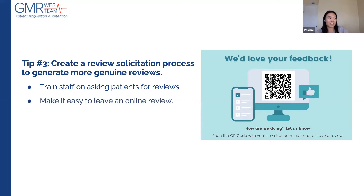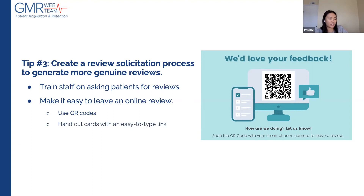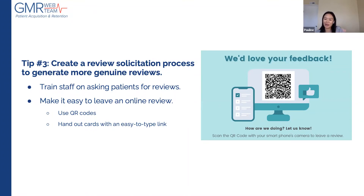You still want to make it easy for patients to leave a review. We recommend having a QR code at the front desk — it's really easy to generate one online linked to your Google, Facebook, or Healthgrades profile. You can also have an easy-to-type link or hand it out on business cards. After their appointment, guide them to the QR code and show them exactly how to leave a review. This is especially effective if a lot of your patients skew a little older, since they often have trouble figuring out how to leave a review.